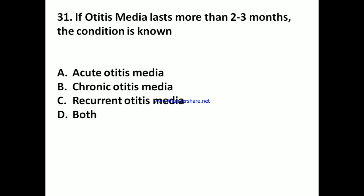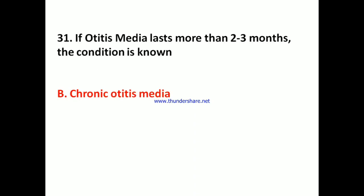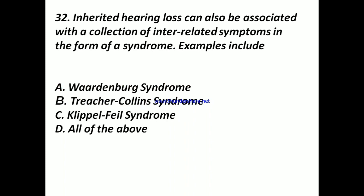Question 31: If otitis media lasts more than 2–3 months, the condition is known as: A) Acute otitis media, B) Chronic otitis media, C) Recurrent otitis media, D) Both. Answer: B) Chronic otitis media.